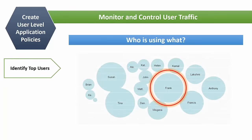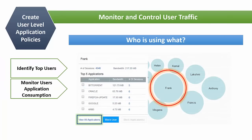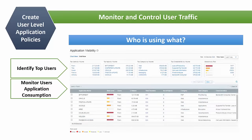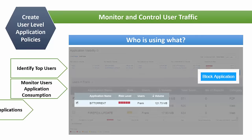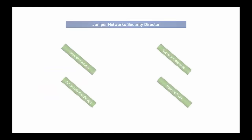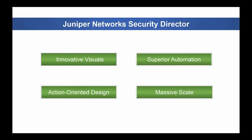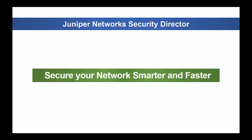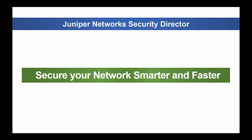Quickly identify top users and apply effective user-level application policies. With no need to navigate through multiple tabs and reports, simply identify high-risk users and block high-risk applications with a single click. Safely enable applications and secure your network smarter and faster with Juniper Network Security Director.